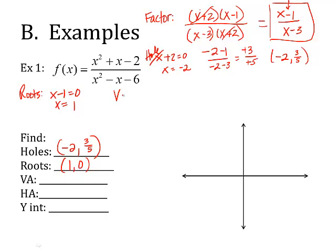Vertical asymptotes: I take the denominator, the factors in the denominator, and set them equal to 0. There's only one factor in the denominator: x minus 3. Set it equal to 0 and I get x is 3. So one vertical asymptote.